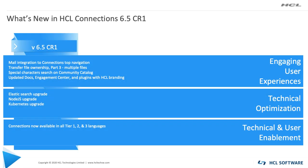CR1 adds — or brings back, I should say — a mail integration in the Connections top navigation, so you can have email at the tip of your finger, no matter where you are within HCL Connections. We also added part three of the ongoing enhancements to the capability to transfer the ownership of a file from yourself to another user. We made some enhancements on the community catalog page, where previously when typing in special characters like you would have in the Czech language, communities wouldn't show up, so we fixed this, as well as updating HCL Docs, the engagement center, and the desktop plugins with HCL branding.